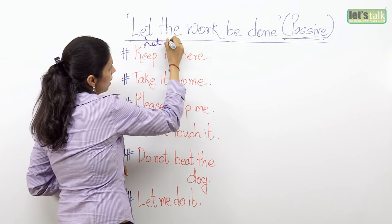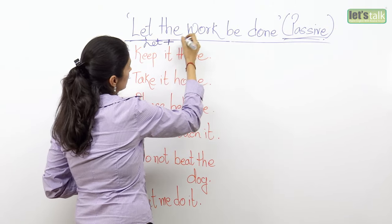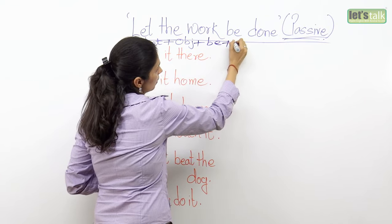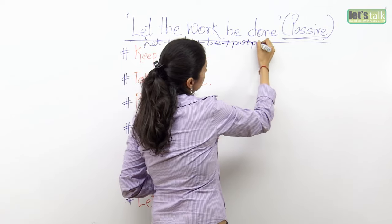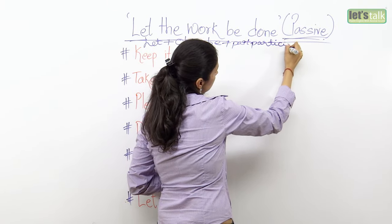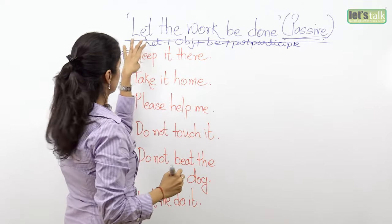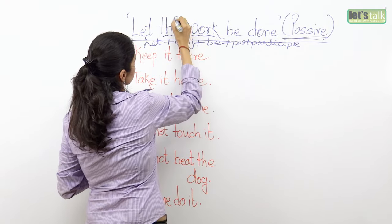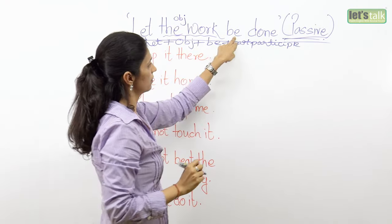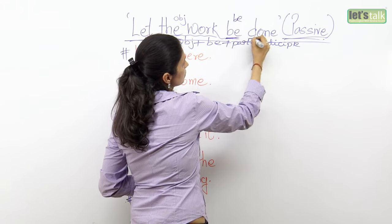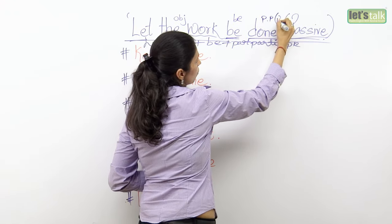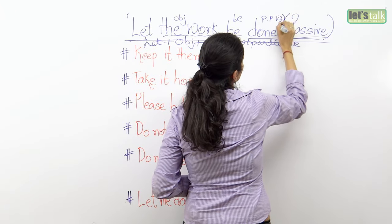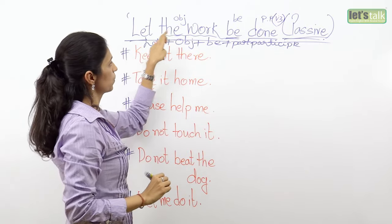You take 'let,' then you have the object from the sentence, then you have 'be,' and you have a past participle verb. So if you see the sentence 'Let the work be done' — you have 'let,' 'the work' is the object, you have 'be,' and 'done' is the verb in the past participle — the third form of the verb. This is how it is: 'Let the work be done.'